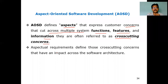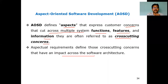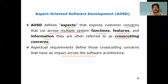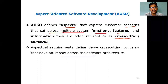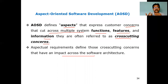Aspectual requirements define those cross-cutting concerns that have impact across the software architectures. This cross-cutting will have more impact on software architecture because you are separating the functions, features, and information such that it gives more inputs. Software architecture deals with components, and when you combine all the concerns, it will develop a component — so it impacts the software architecture.